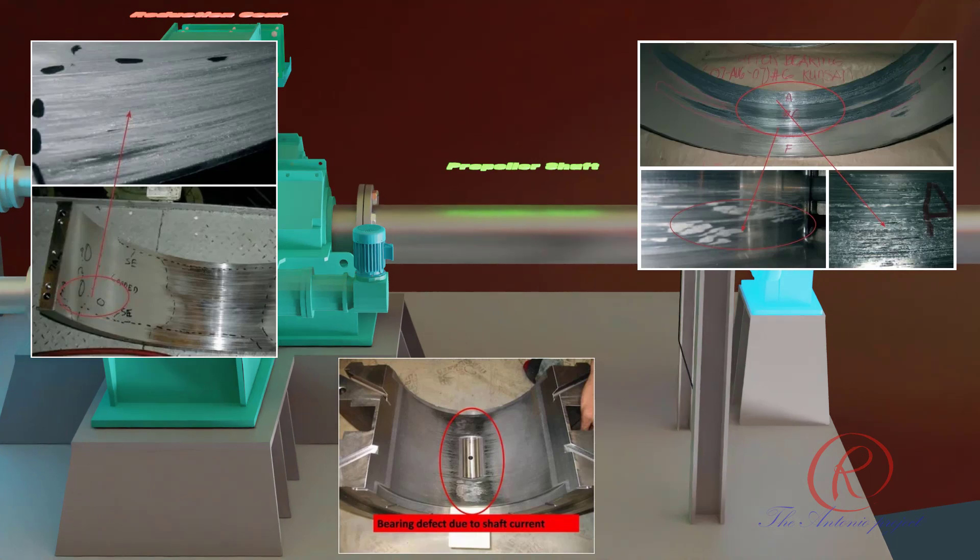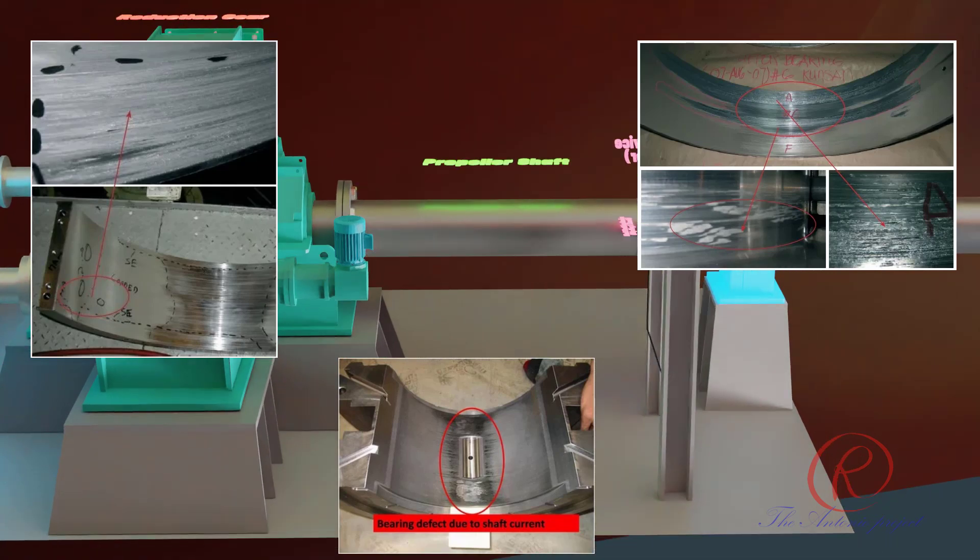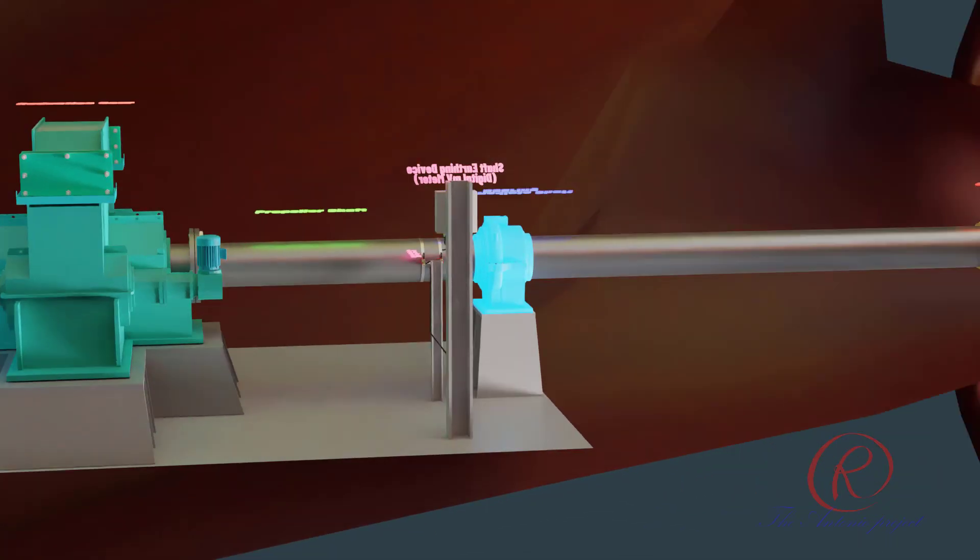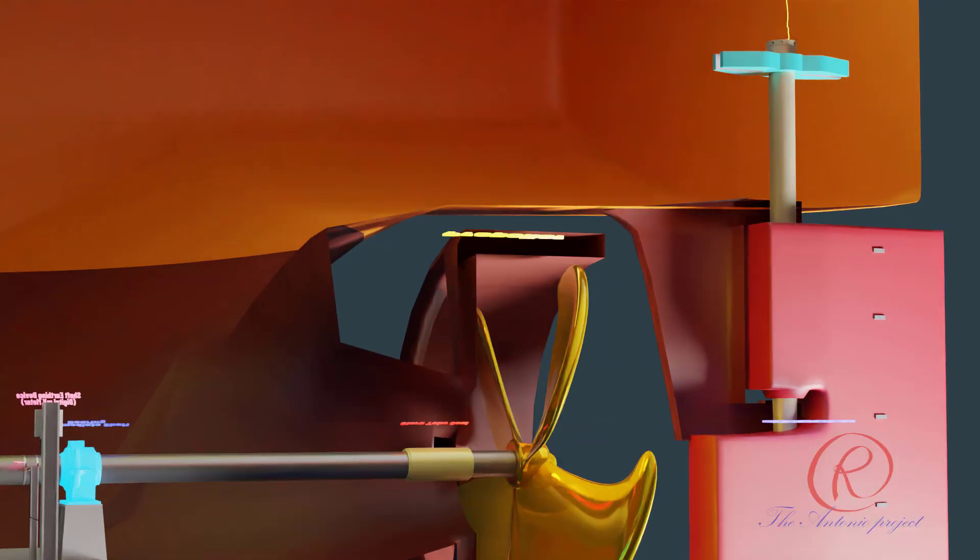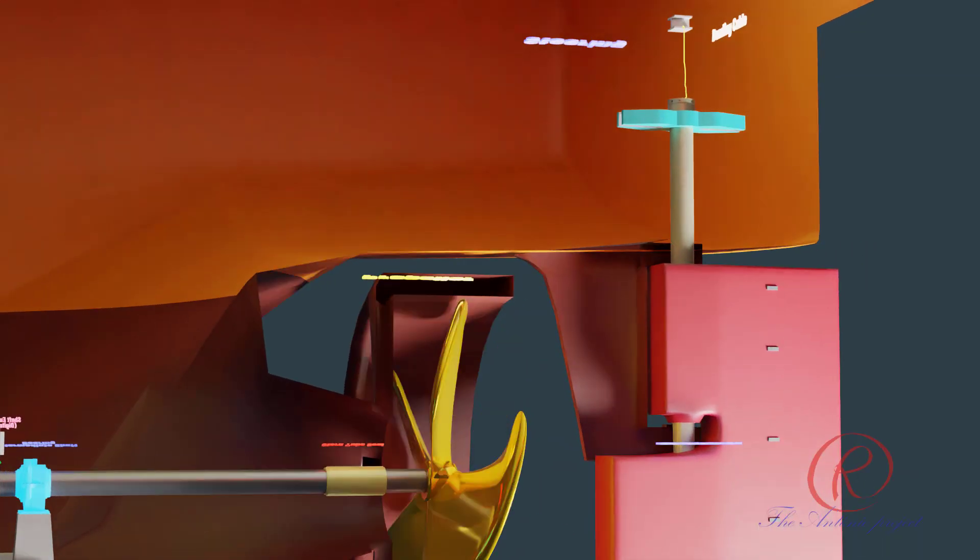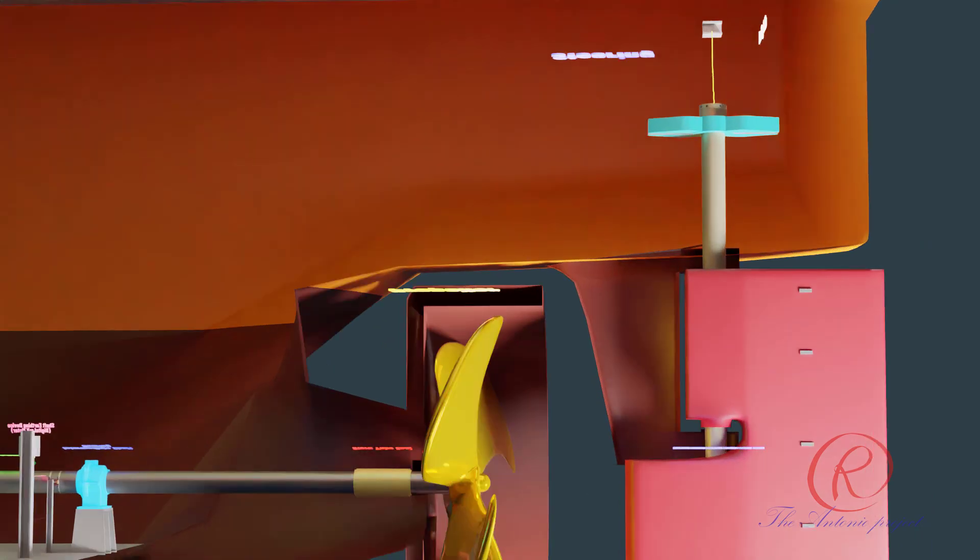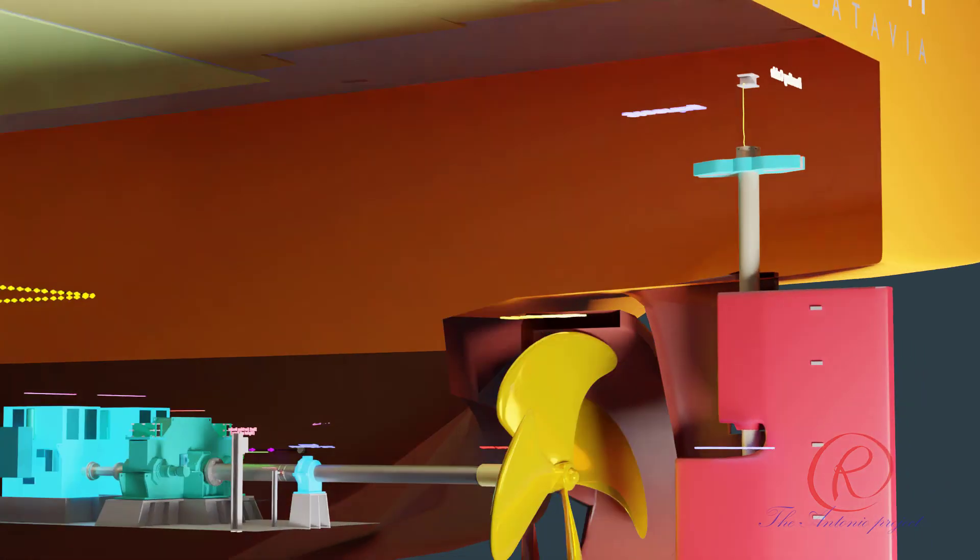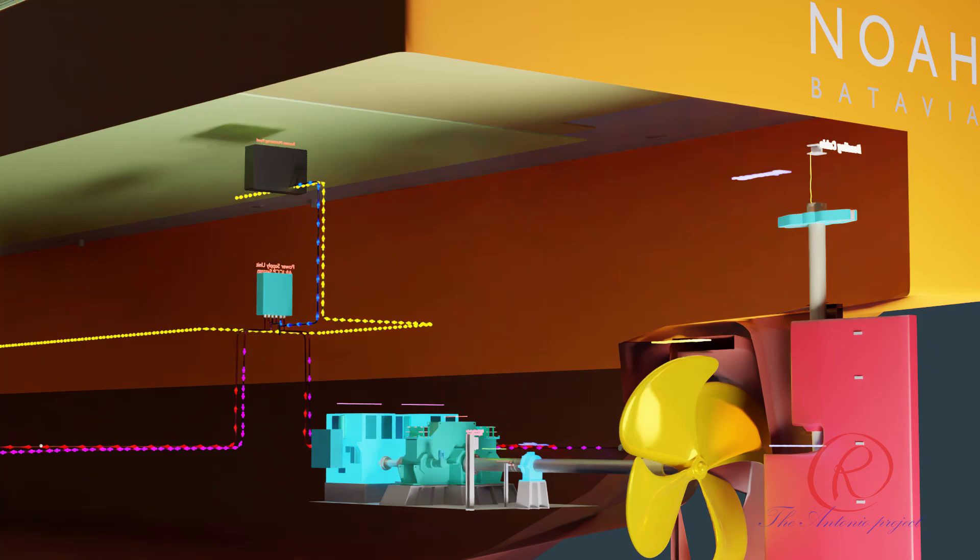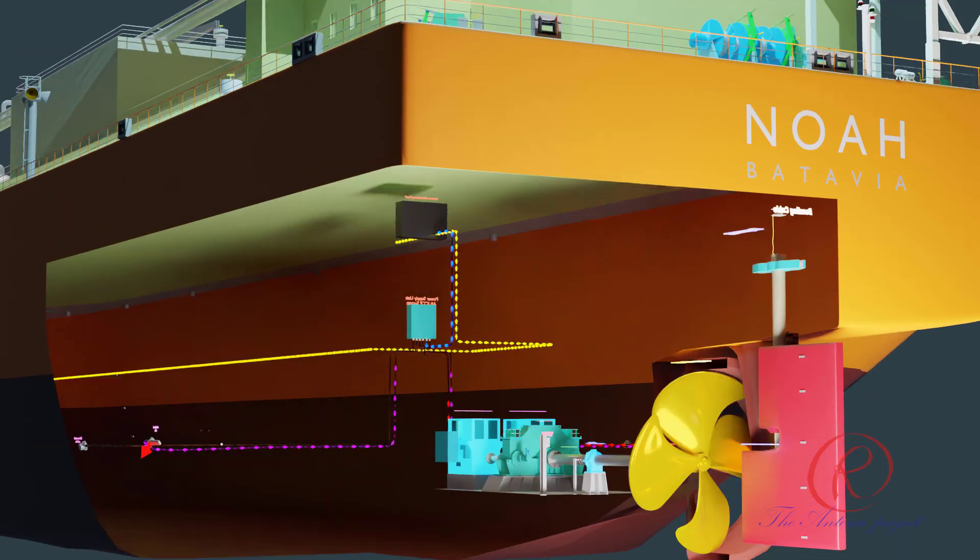This current can cause the pitting of the bearing surface. Excessive wear on the shaft bearings can often be traced to this cause. This problem can be eliminated by earthing the propeller shaft to the hull with the help of slip ring and contact brush assembly, and for the rudder to be connected with bonding cable to the ship's hull.